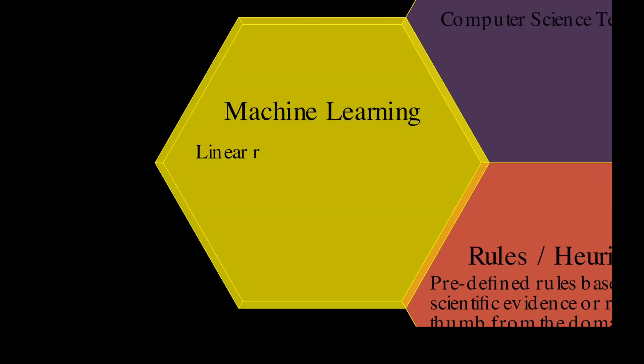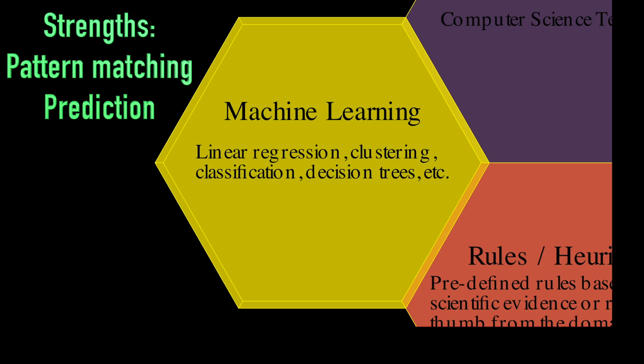Machine learning is an uber-broad category that includes various techniques like linear regression, support vector machines, clustering and decision trees. Strengths? They're capable of finding patterns in large data sets and making predictions.